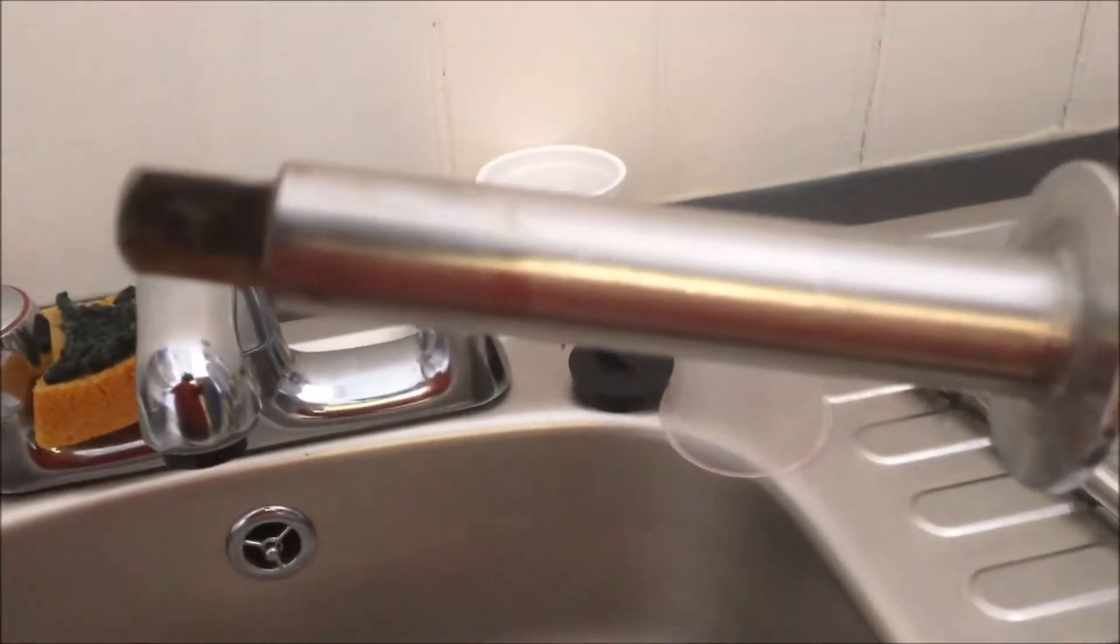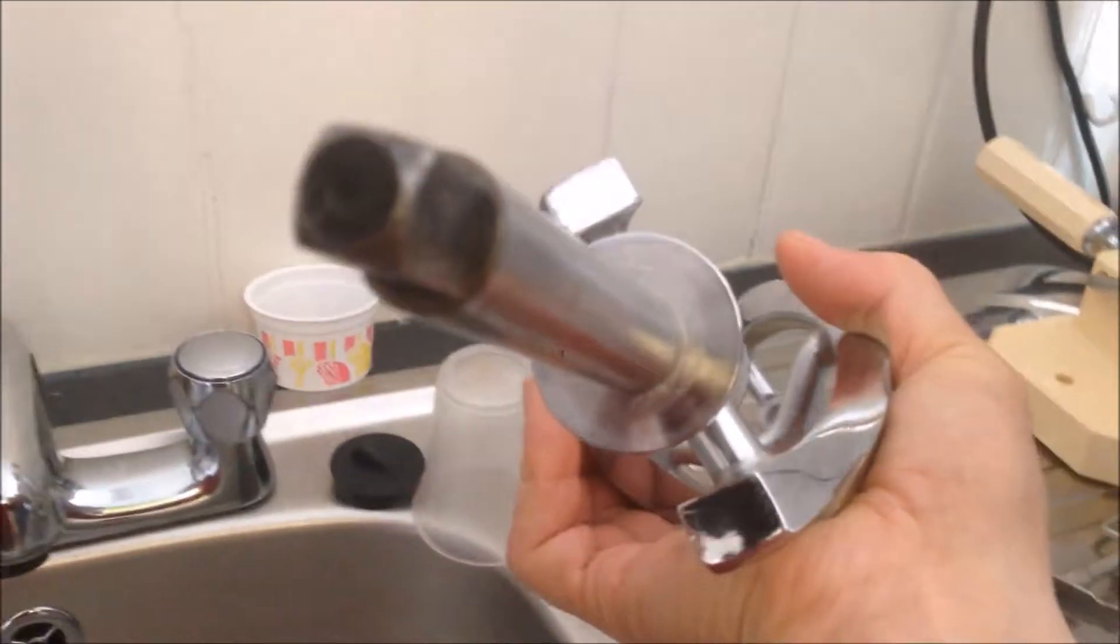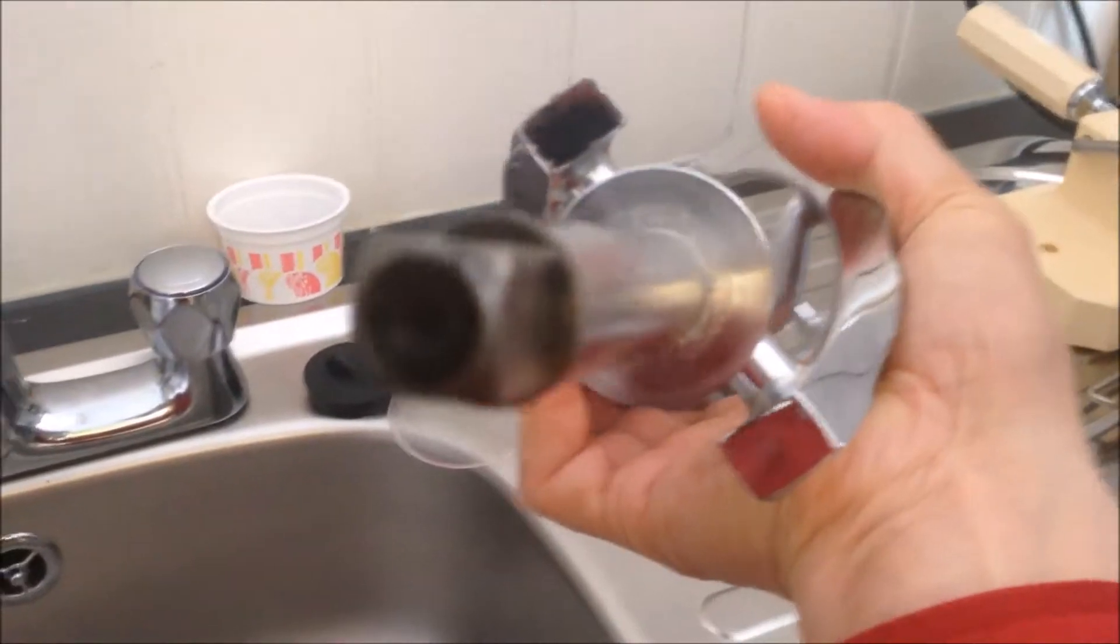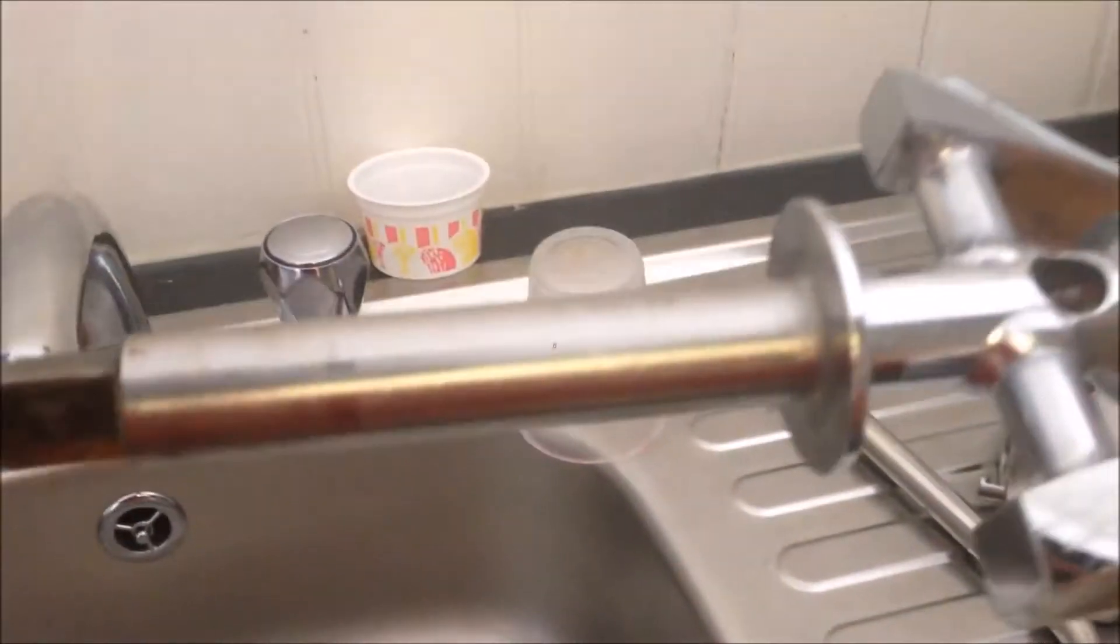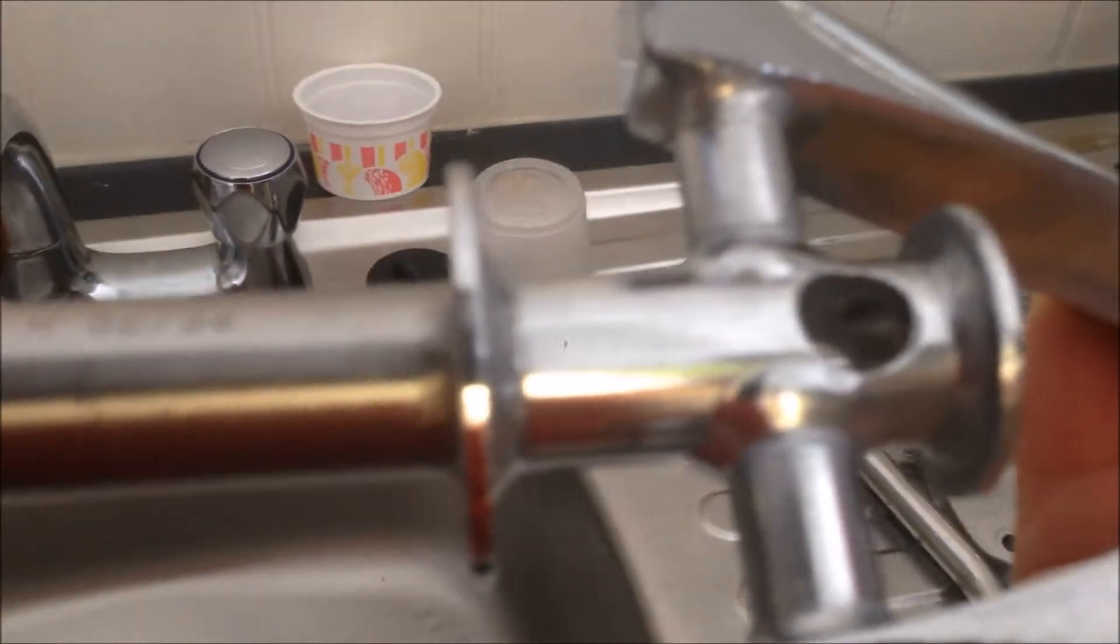We have the beater here. The beater is very heavy. We have the end, this end, this is the drive end. There's a socket that will drive this beater rotating, and here we're going to put a seal, a rubber seal.